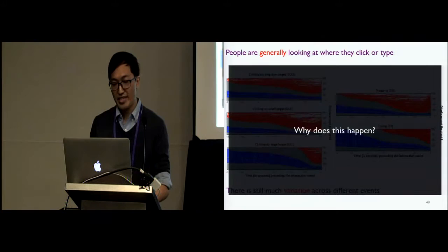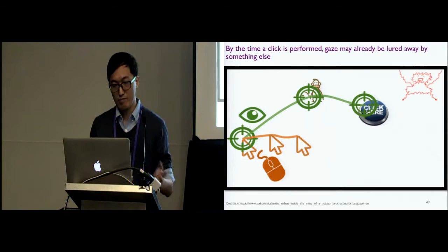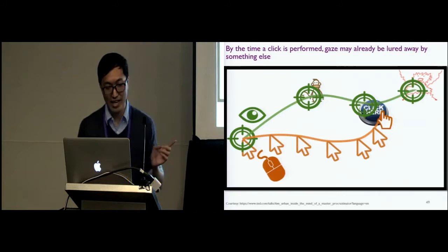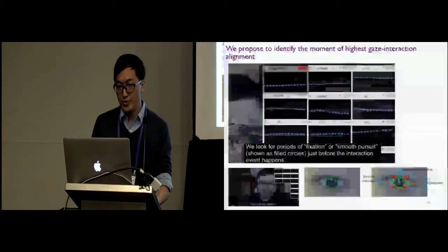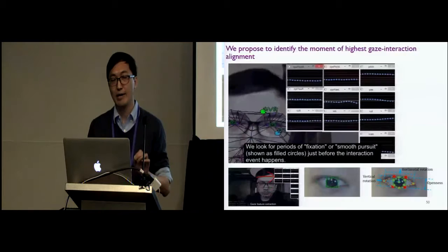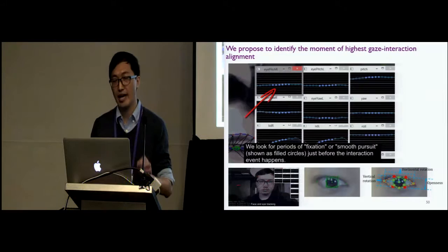But why does this happen? This simple cartoon may illustrate a possibility. By the time that the user actually clicks on a target, their gaze may already have been ruled by something else, the panic monster in this case. So if we are going to use the interaction cue for eye gaze learning, we need to identify the moment of the highest gaze interaction alignment. And to look for this alignment, the key is to identify the fixation and smooth pursuit, which suggests that the user is focusing on some target just before the interaction happens.